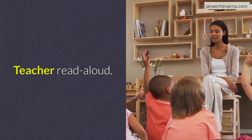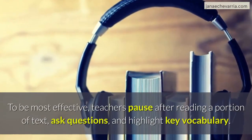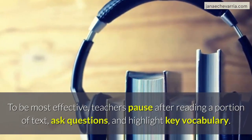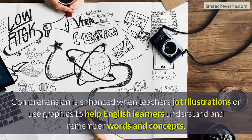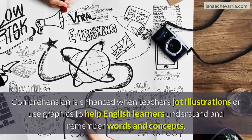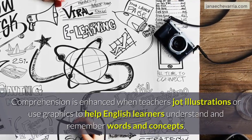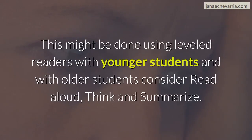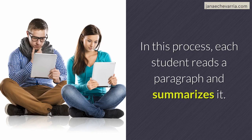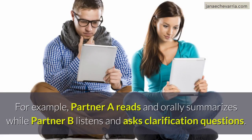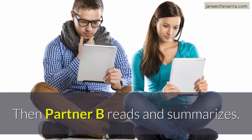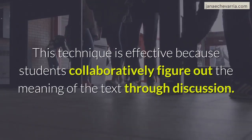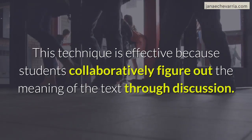Also, teacher read-aloud. To be most effective, teachers pause after reading a portion of text, ask questions, and highlight key vocabulary. Comprehension is enhanced when teachers jot illustrations or use graphics to help English learners understand and remember words and concepts. Another scaffold is partner reading. This might be done using leveled readers with younger students, and with older students, consider read-aloud, think, and summarize. In this process, each student reads a paragraph and summarizes it — partner A reads and orally summarizes, while partner B listens and asks clarification questions. Then partner B reads and summarizes. This technique is effective because students collaboratively figure out the meaning of the text through their discussion.